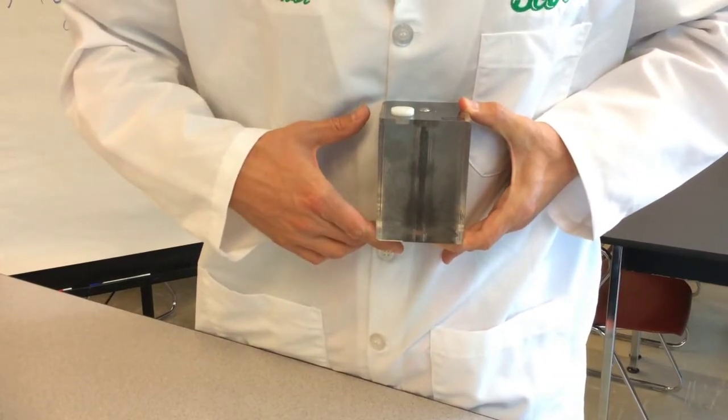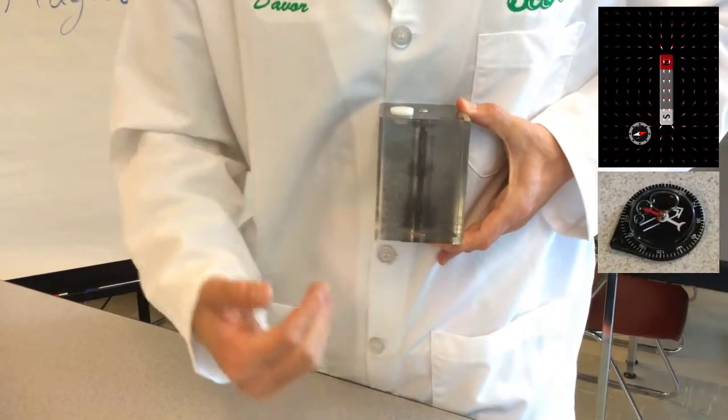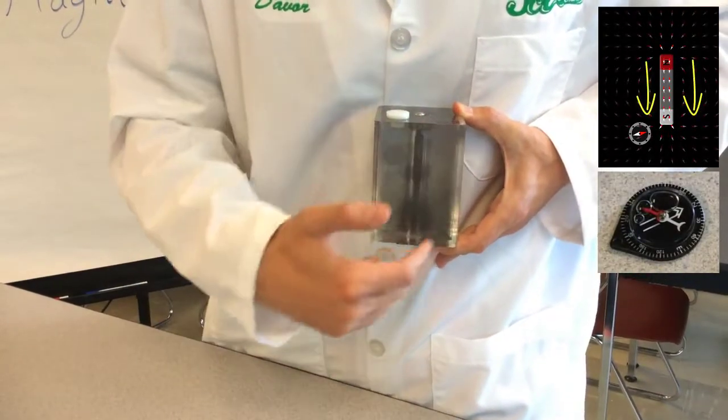You can think of each of these iron filings as a tiny little compass that's pointing itself in the direction from north to south and showing us the field lines.